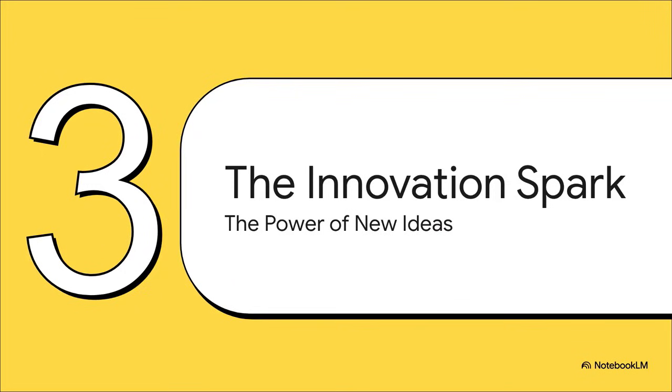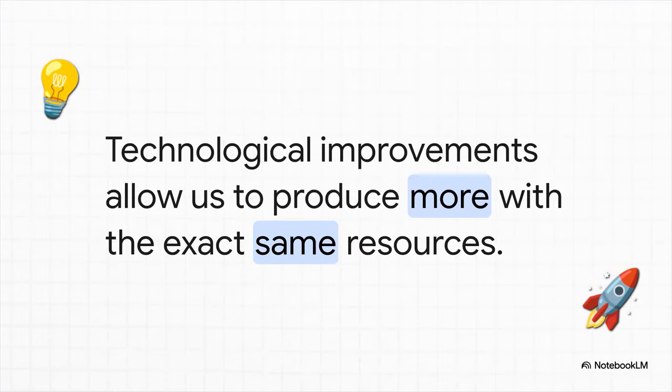All right, so we've got smart, skilled people and we've given them great tools. That's a fantastic start. But there is a third ingredient, a sort of wild card that can completely change the game. And that, my friends, is the power of a new idea. This is really where technology comes in and shines. Because technology is, for all intents and purposes, a massive multiplier. A single breakthrough, it could be a new piece of software, a more fuel-efficient engine, anything, it lets us produce more with the exact same amount of resources. Suddenly, you don't need more people or more factories. You just need a smarter way of doing things. This is the stuff that doesn't just nudge that economic boundary line. It blows it wide open.